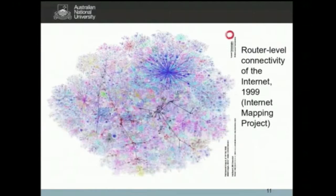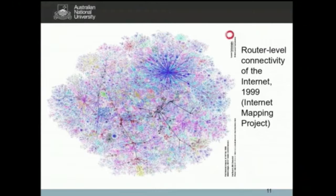I came across a network map showing the internet as it looked in 1999 through the internet mapping project. A software tool was used to find the shortest pathway from a root node — perhaps a web server at MIT — using software such as Traceroute, to find the shortest pathway from that machine to all the other machines that were pushing packets of information around on the internet.